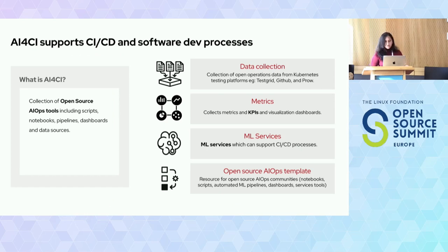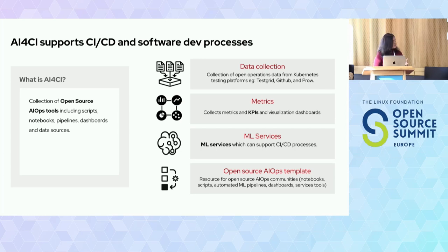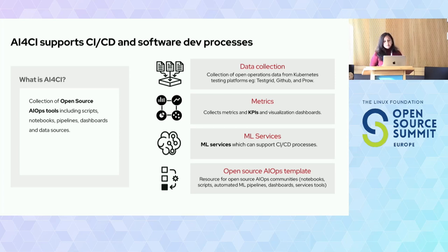As part of this project, AI for CI, we periodically collect open operations data originating from Prow — which is the Kubernetes testing infrastructure — TestGrid, which is the visualization platform for passing and failing tests, GitHub, and Bugzilla, which is the bug tracking system used at Red Hat. We collect key performance indicator metrics from the CI/CD data and display them on dashboards. We also build ML services like the ones I mentioned and share them as notebooks, scripts, tools, dashboards, and the pipelines that make up these tools.